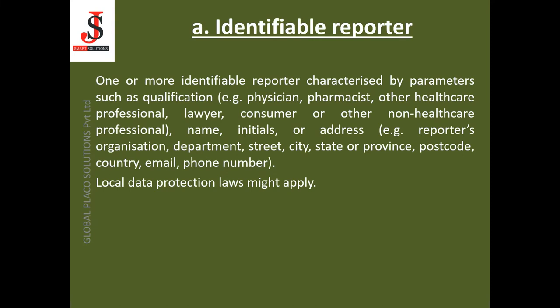An identifiable reporter is characterized by parameters such as qualification — for example physician, pharmacist, other healthcare professional, lawyer, consumer, or other non-healthcare professional — as well as name, initials or address, including the reporter's organization, department, street, city, state or province, postcode, country, email, and phone number. All these details should be captured to have an identifiable reporter. Local data protection law might apply.